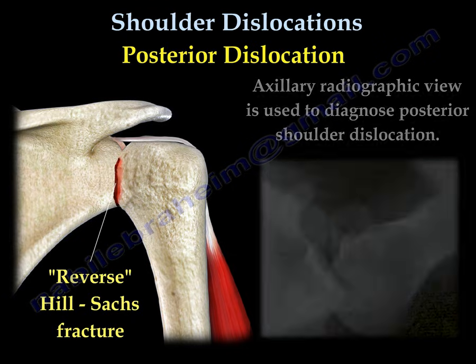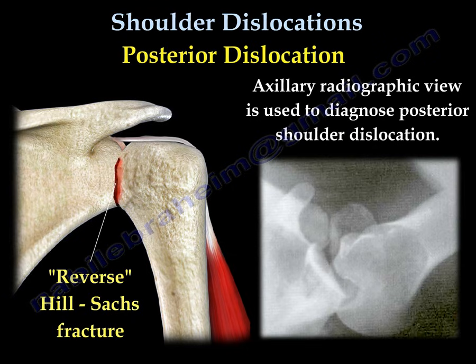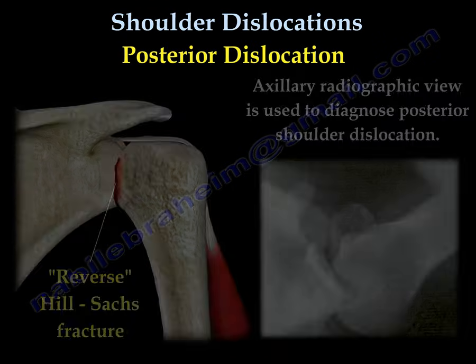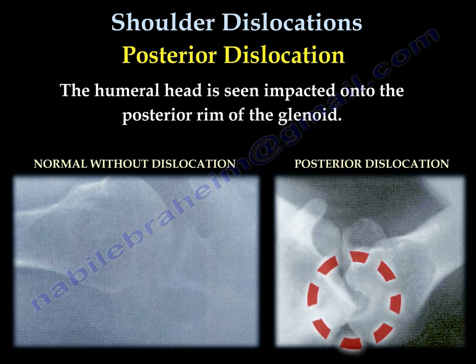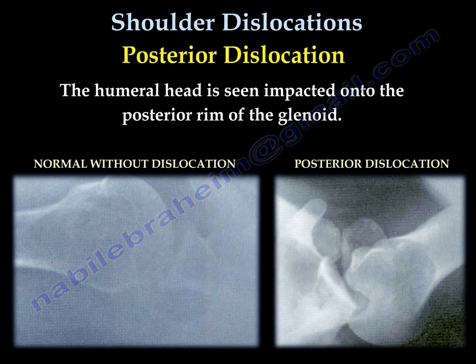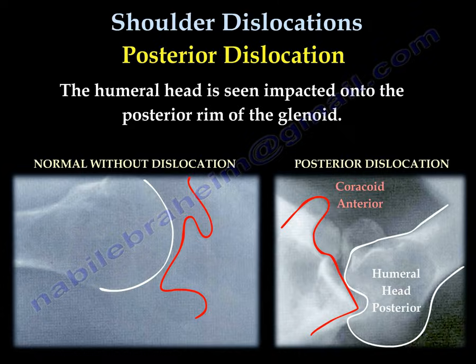Axillary radiograph is the best view to diagnose posterior shoulder dislocation. You can see two axillary views: on the left, a normal one without dislocation; on the right, a posterior dislocation of the shoulder. The coracoid is anteriorly positioned and the humeral head is going posteriorly.